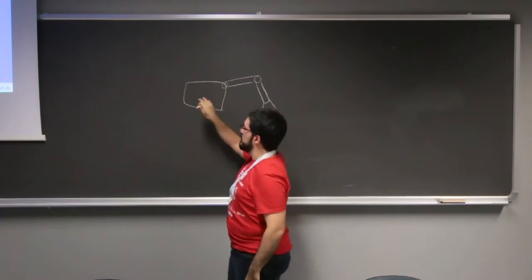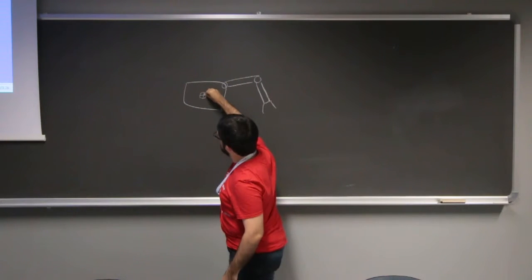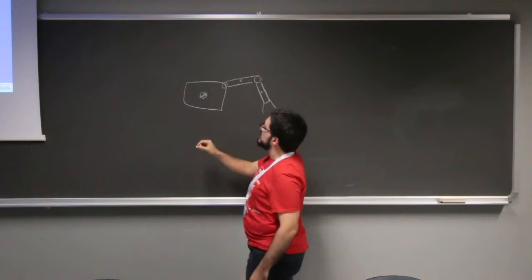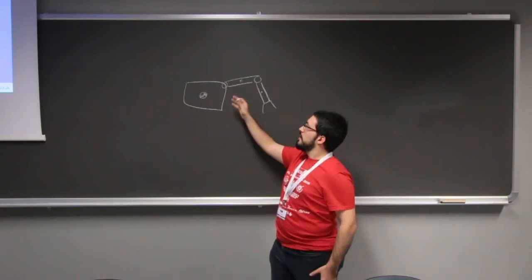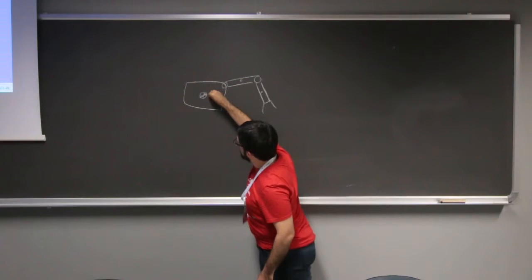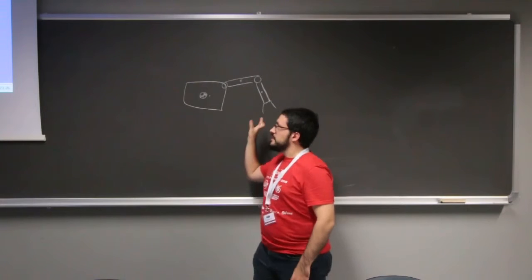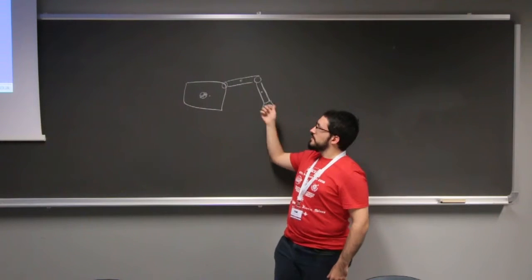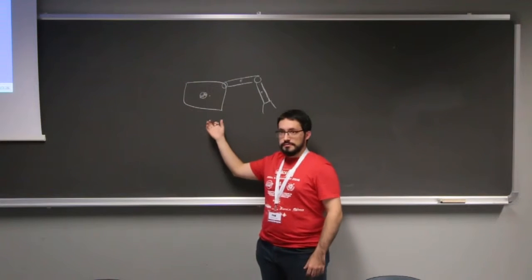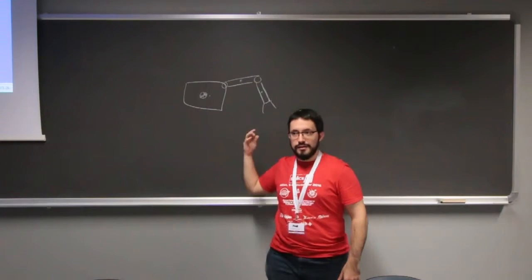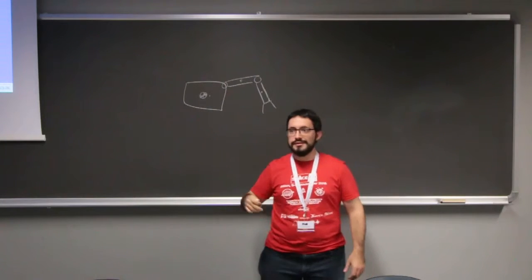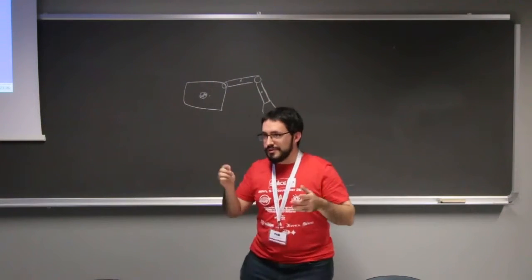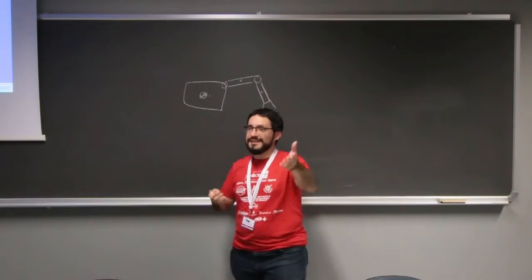Let's say you have a heavier base — the center of mass is roughly here — but you also have a smaller mass on the arm, so the actual center of mass shifts. If you try to move the robotic arm, it moves the base too. The principle is conservation of momentum — momentum is mass times velocity.